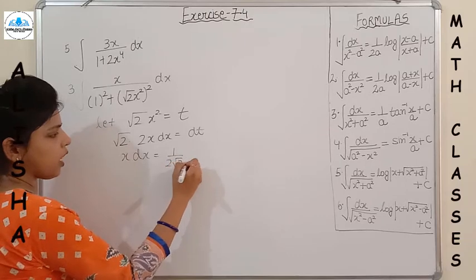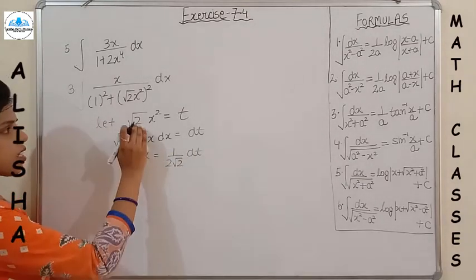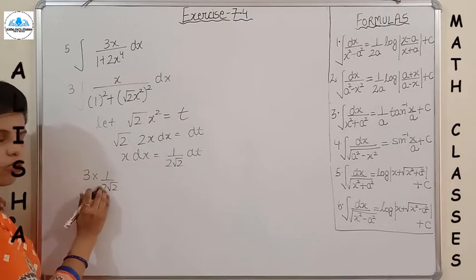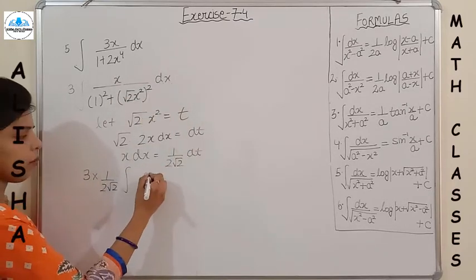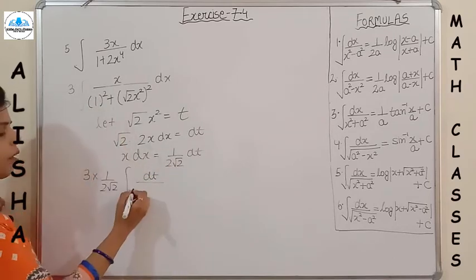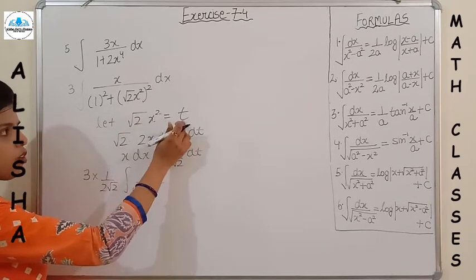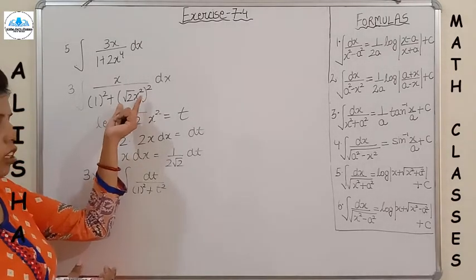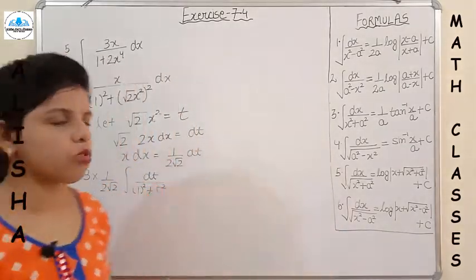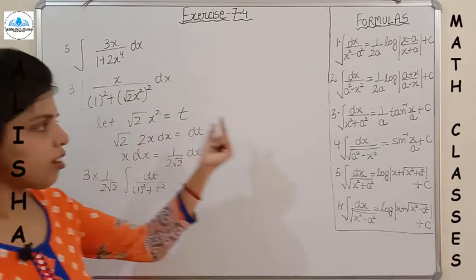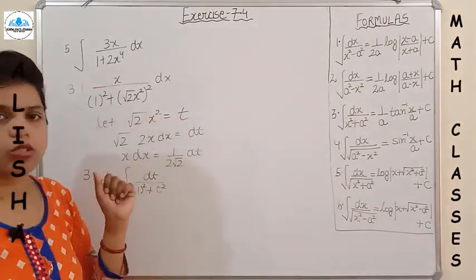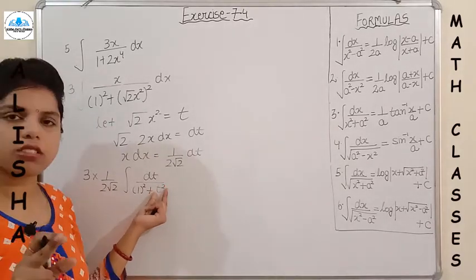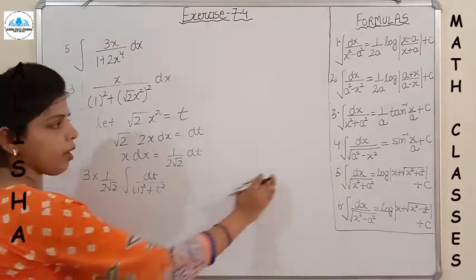Substituting the values of x dx and √2 x², putting 1/(2√2) outside as a constant, the integral becomes (1/(2√2)) · dt/(1² + t²). The coefficient of t² is 1, which is always required for the standard form. This is the formula of the third type: integration of dx/(x² + a²) = (1/a) tan⁻¹(x/a).